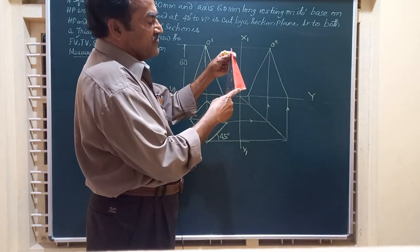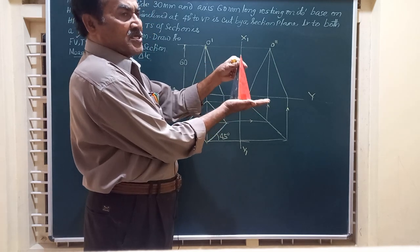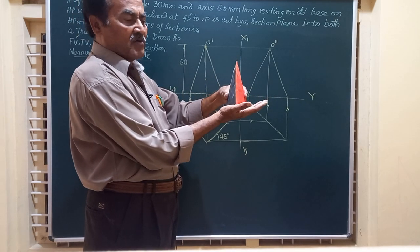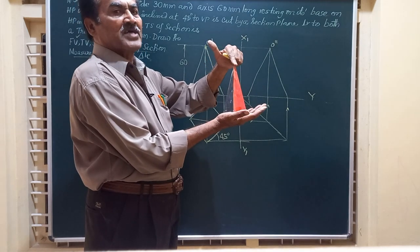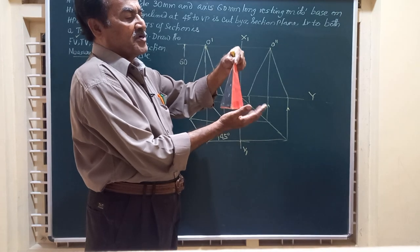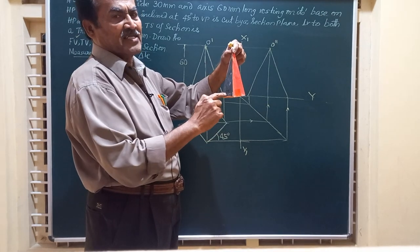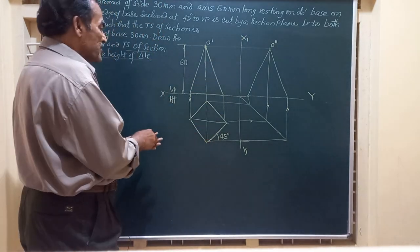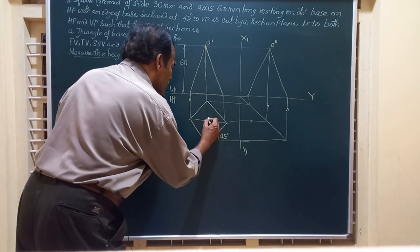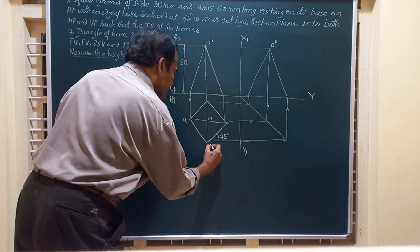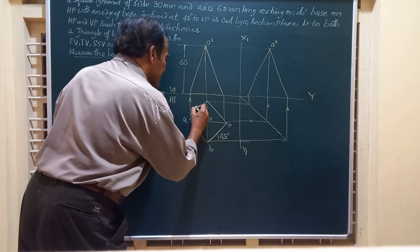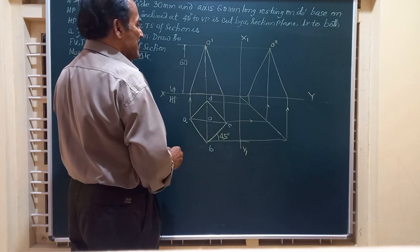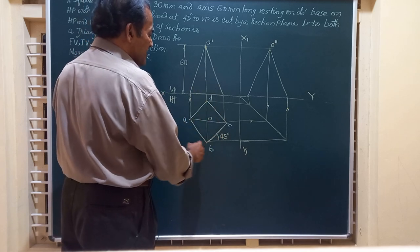One of the base edges or two adjacent base edges are equally inclined to VP, and we obtain the top and front views of the solid. The top view is going to be a square of side 30 mm and the front view is going to have two triangles — one triangle and the other triangle. We obtain the front view of height 60 by projecting all these lines.